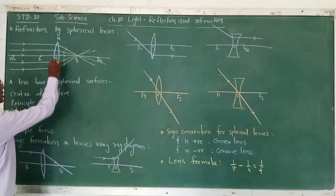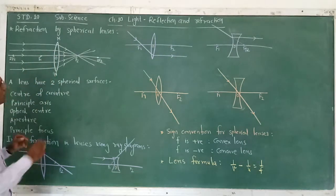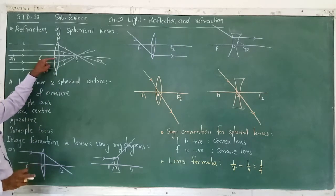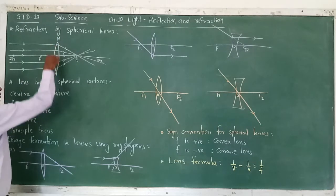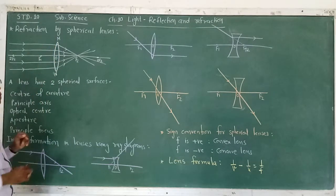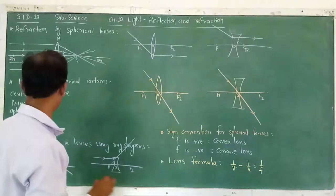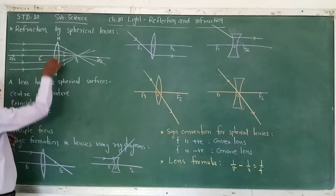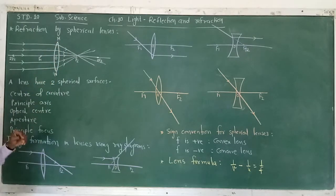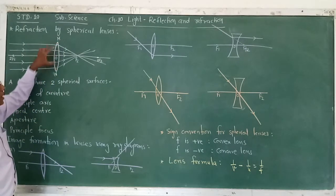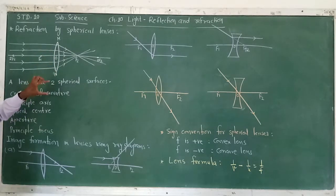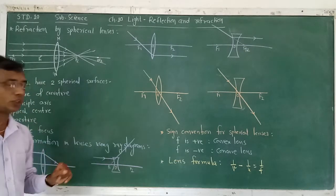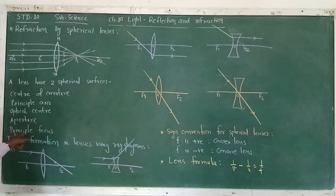The center point of the lens is known as the optical center, denoted by O. The diameter of the lens is known as the aperture, denoted by MN. The principal focus: if all rays incident on the lens converge after refraction to a single point on the other side, that point is known as the principal focus. A lens has two focal points, F1 and F2.